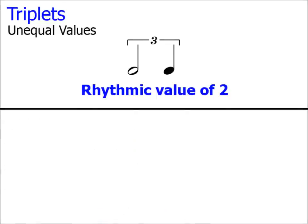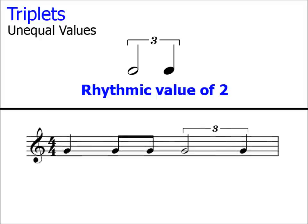Let's place it in a bar of 4-4 so we can see exactly how it fits. Here's beat 1, here's beat 2. Next is our triplet and because it has a rhythmic value of 2, it takes up 2 beats in our bar. These two beats 3 and 4.